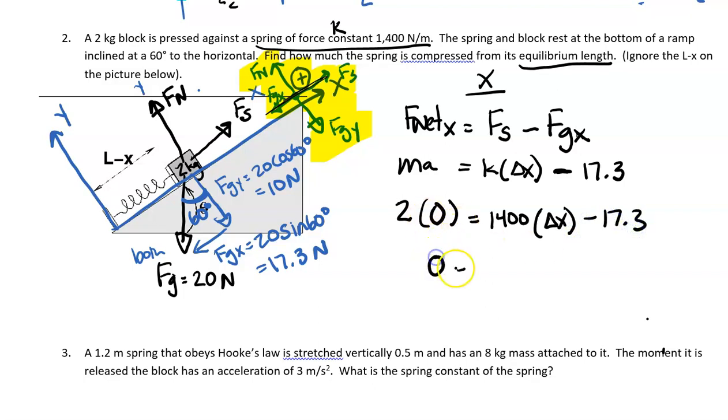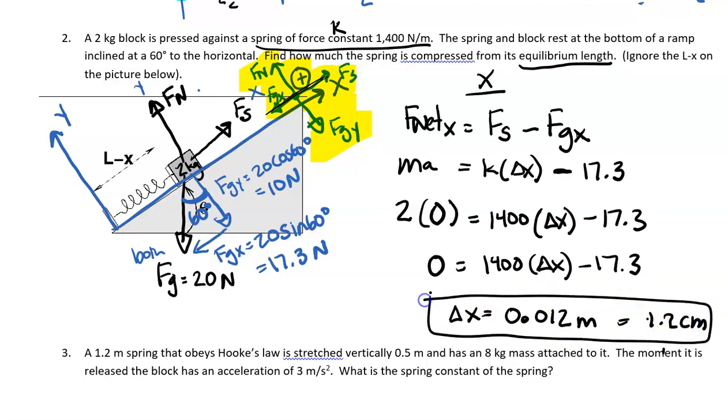So 2 times 0, we know that is 0, equals 1400 delta X minus 17.3. Let's do some good old math. And I go ahead and solve this and I get delta X to be 0.012 meters, or that would be 1.2 centimeters. So it's not compressed too much, but just a little bit.